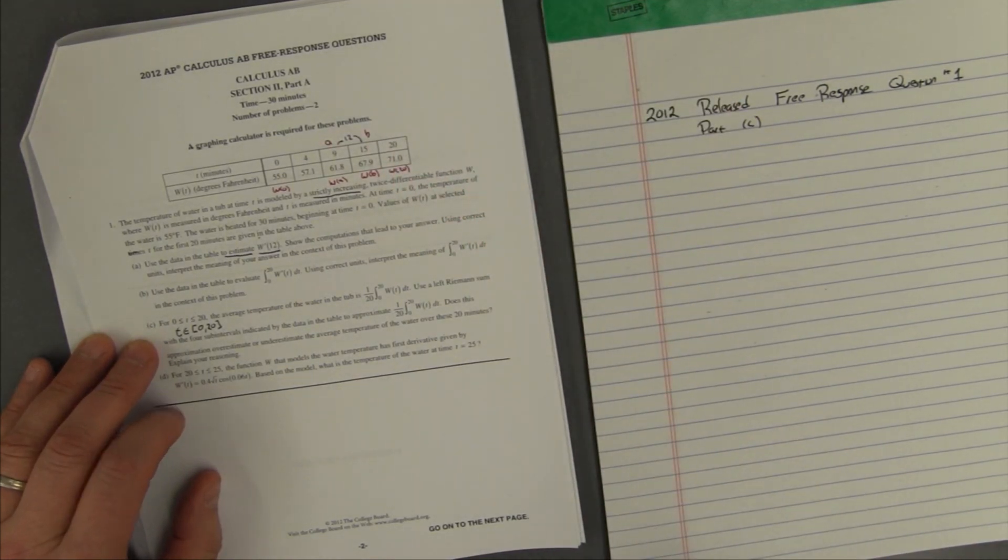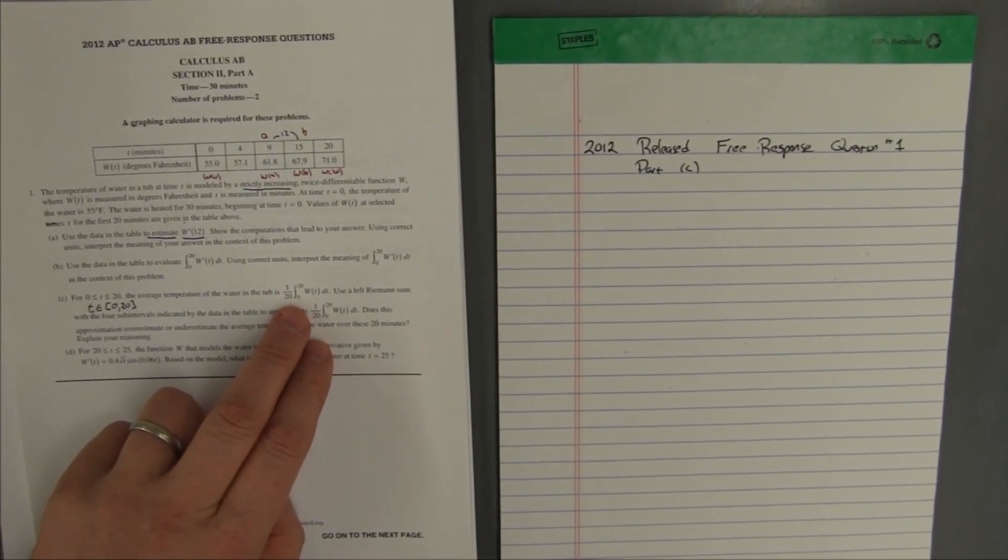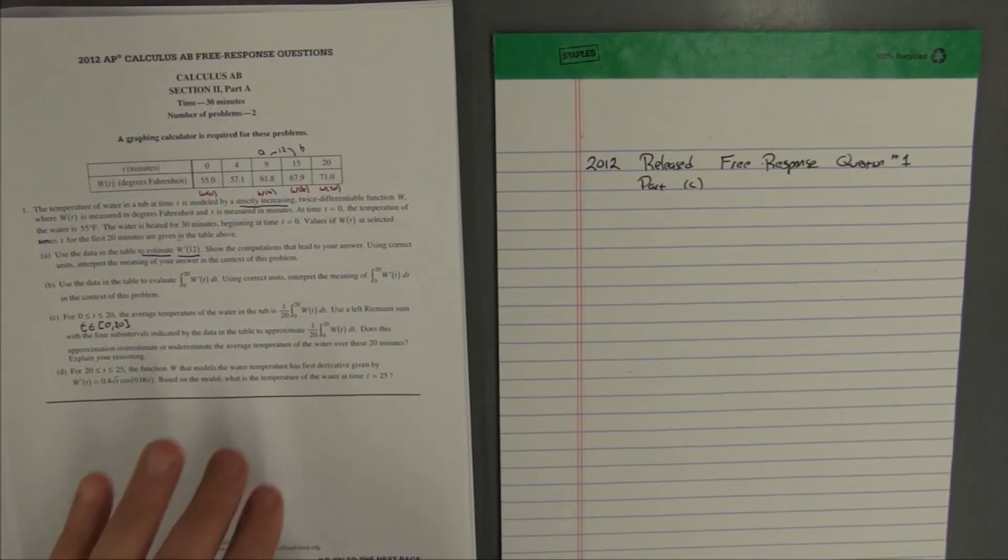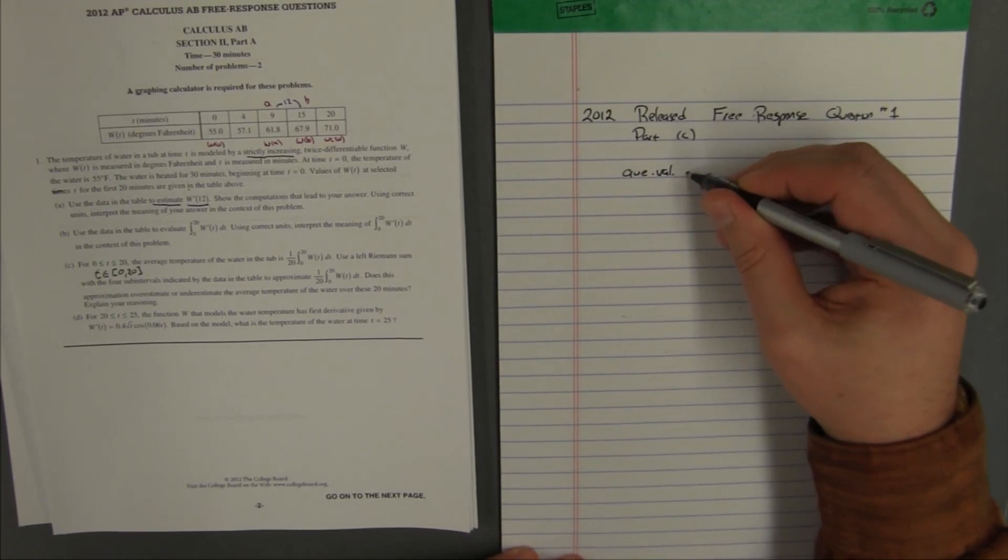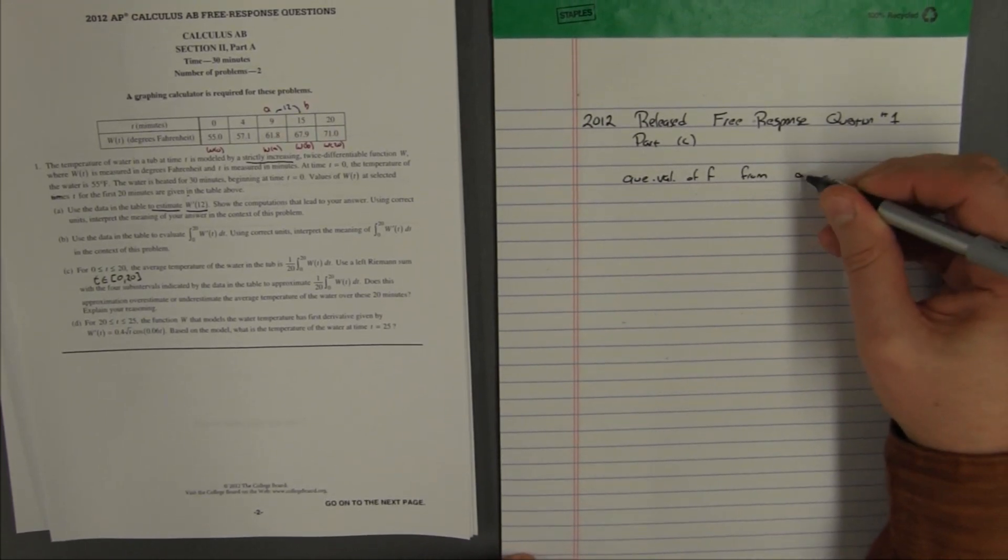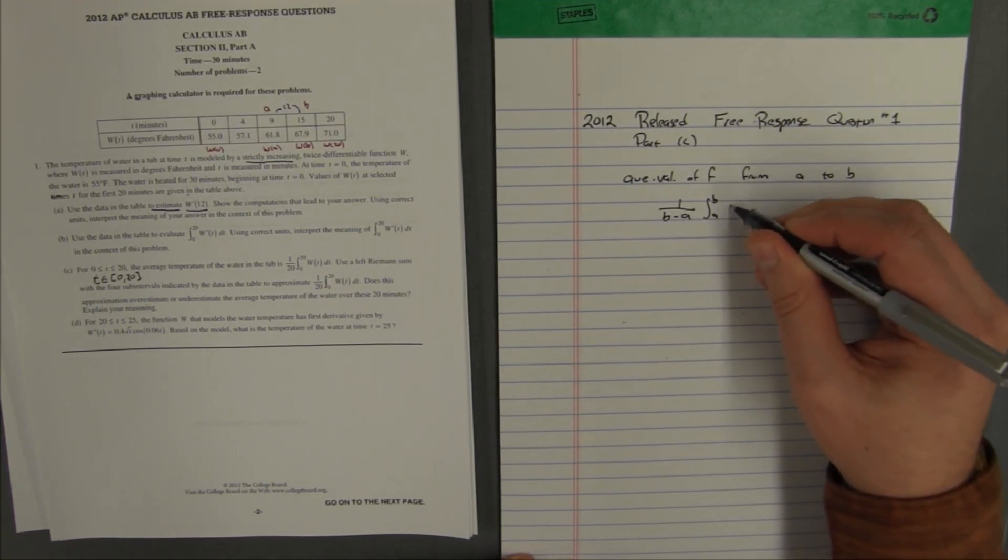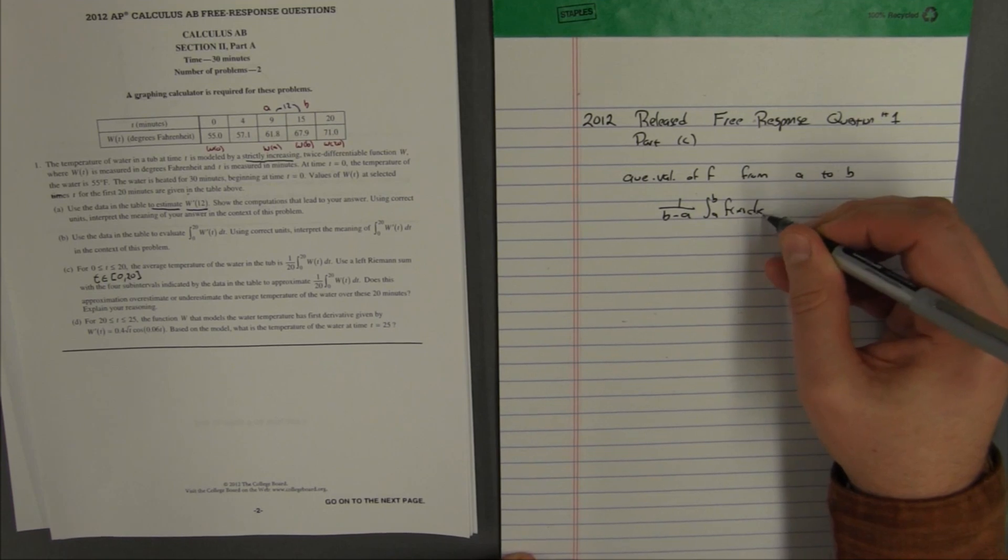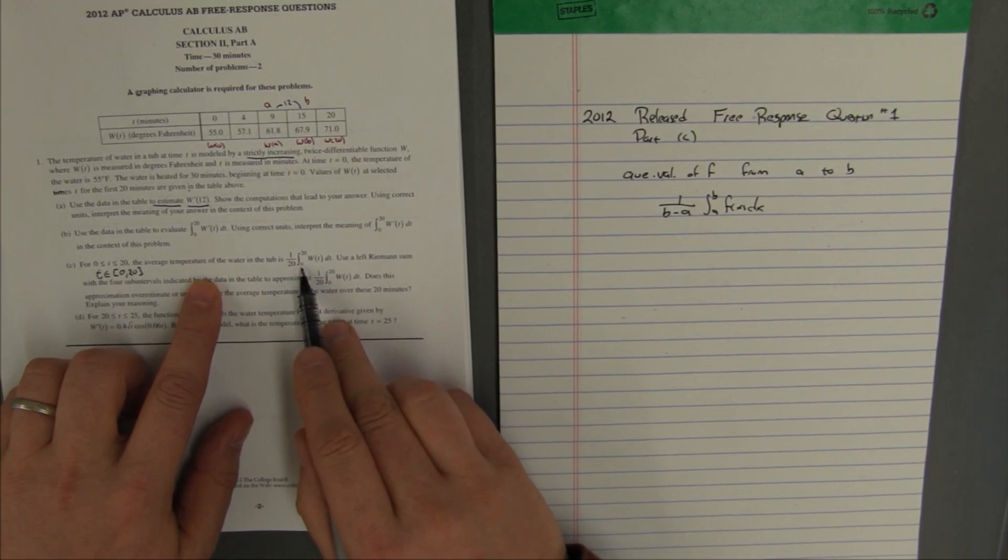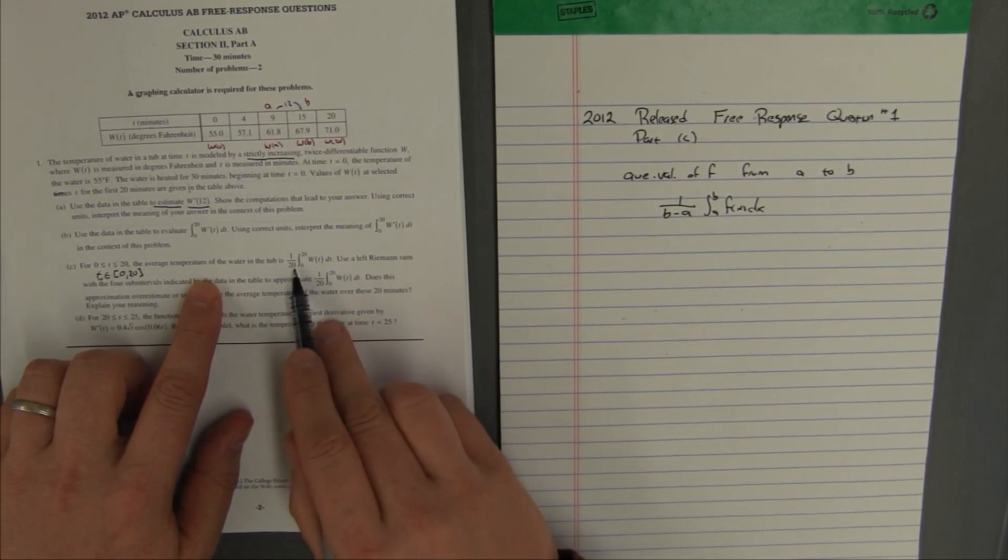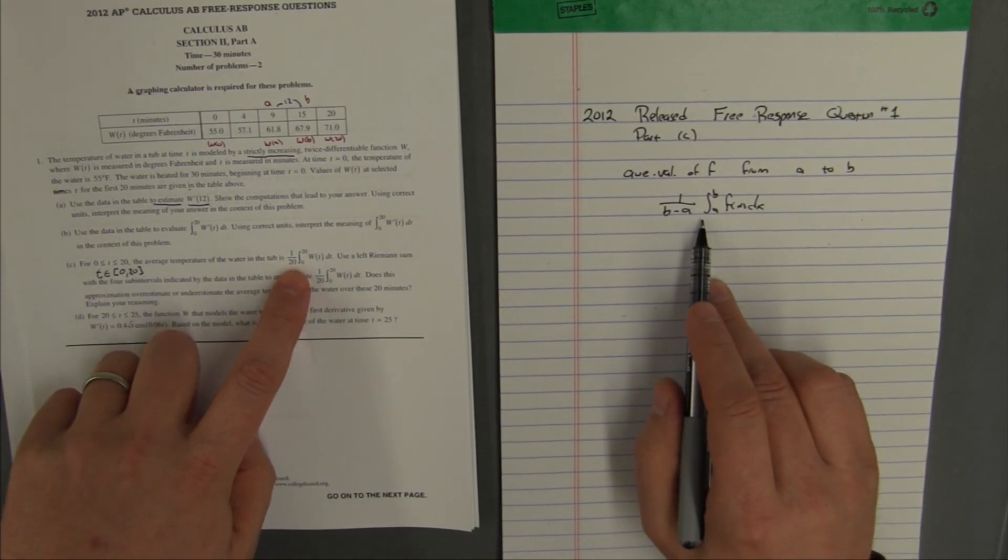If we look up at our data, unsurprisingly, it runs from 0 to 20. Now it tells us that the average temperature of the water of the tub is 1/20th integral from 0 to 20 of W(T) dT. Now they were very nice to tell you that, they didn't have to tell you that. You are supposed to know that the average value of f from a point a to a point b is 1 over (b minus a) times the integral from a to b of f(x) dx. That's the average value of any function. So they nicely gave you that, so the a is 0, the b is 20, and so b minus a is 20. So this formula is just this formula for the average value of a function.